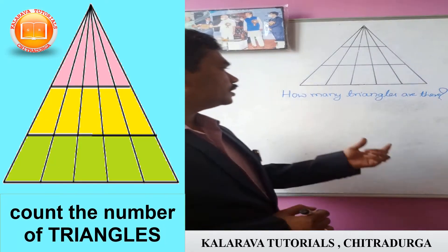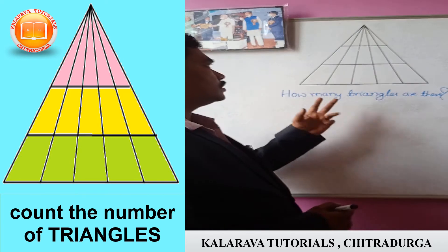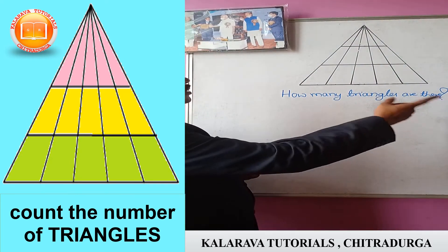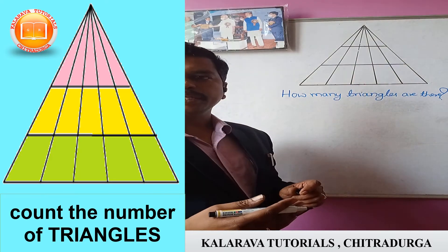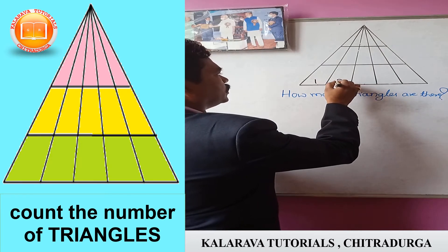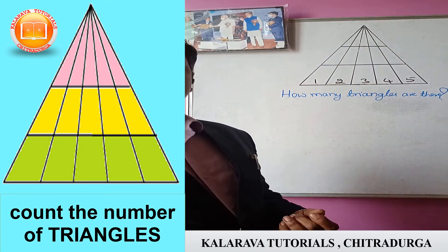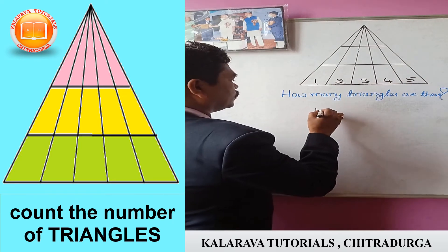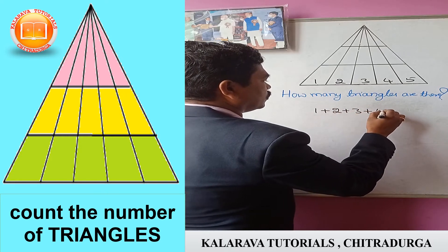Dear students, you have to find out the number of triangles in this diagram — a question from the competitive exam. You observe there are 5 parts in this one. In the base, you take the numbers 1, 2, 3, 4, 5. This is the easy method. You have to add these numbers: 1 plus 2 plus 3 plus 4 plus 5.